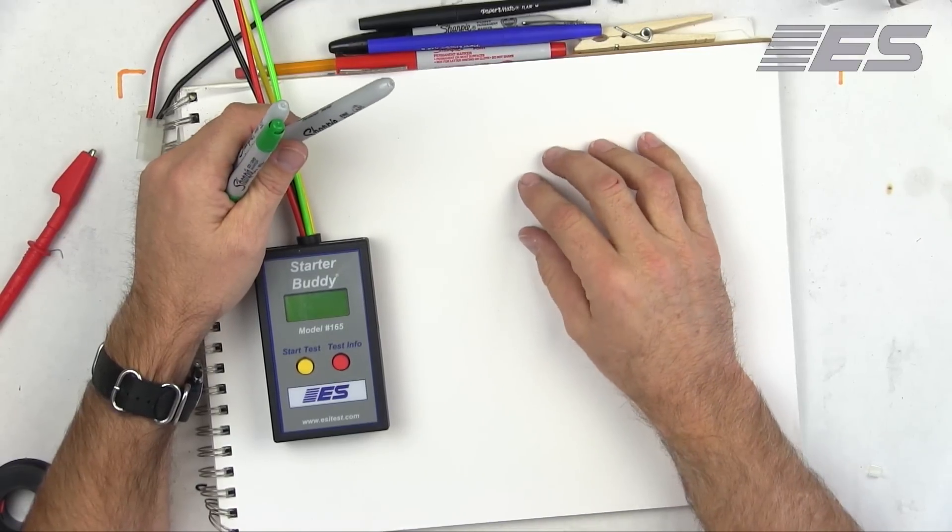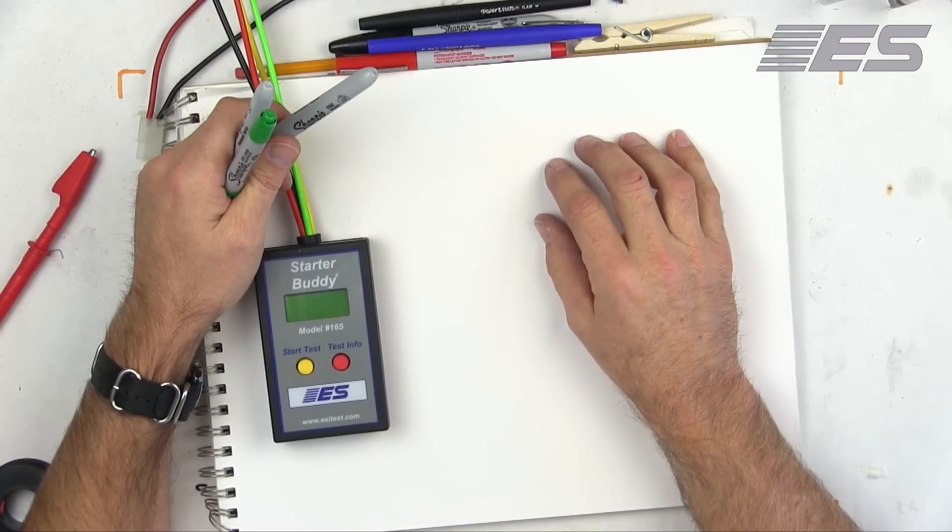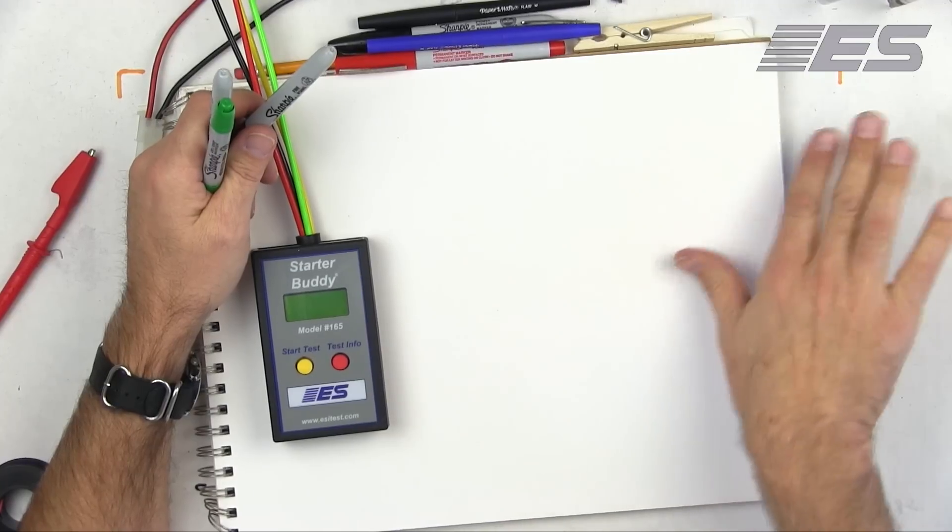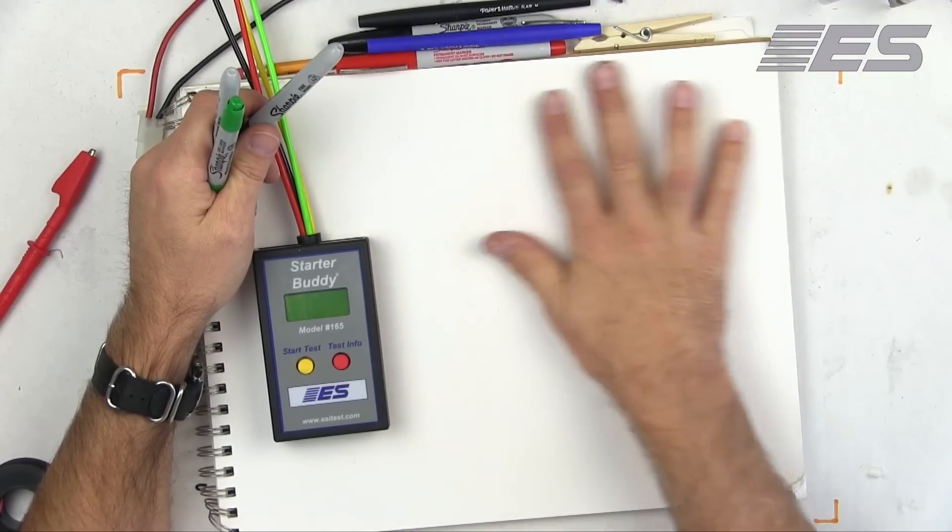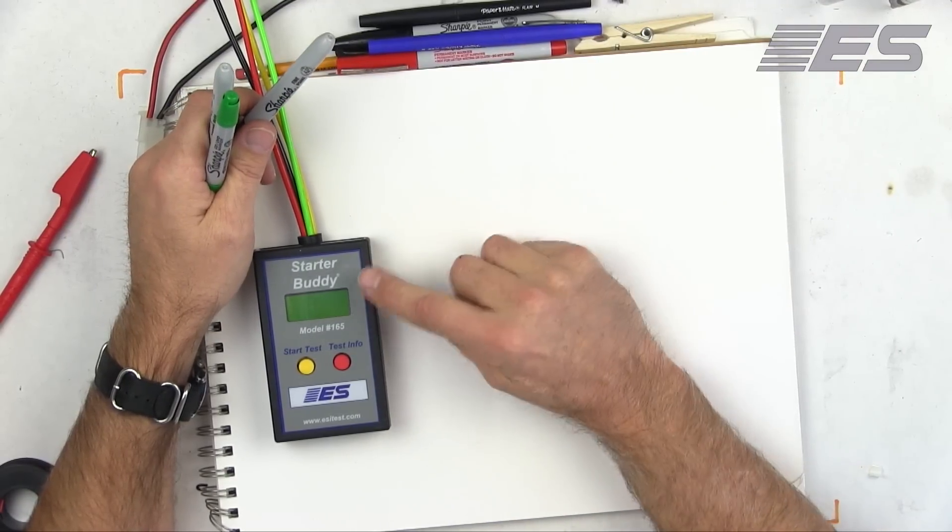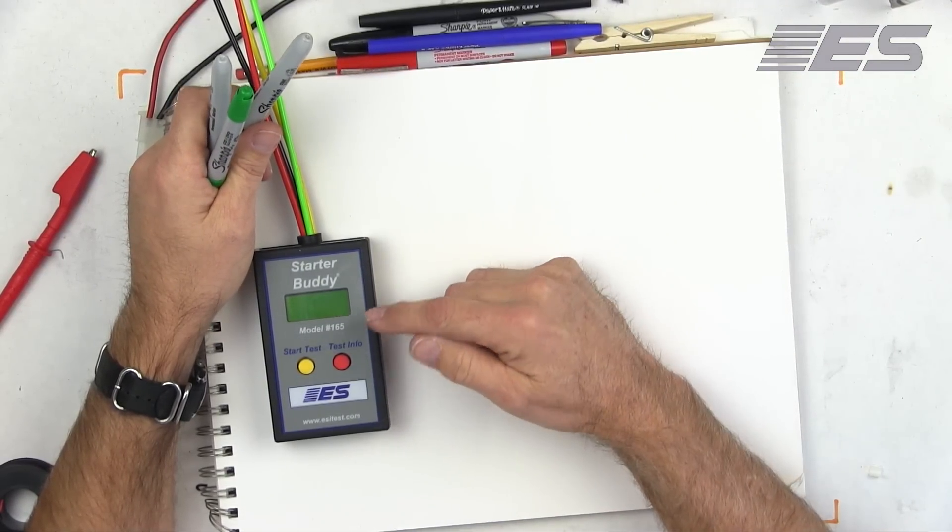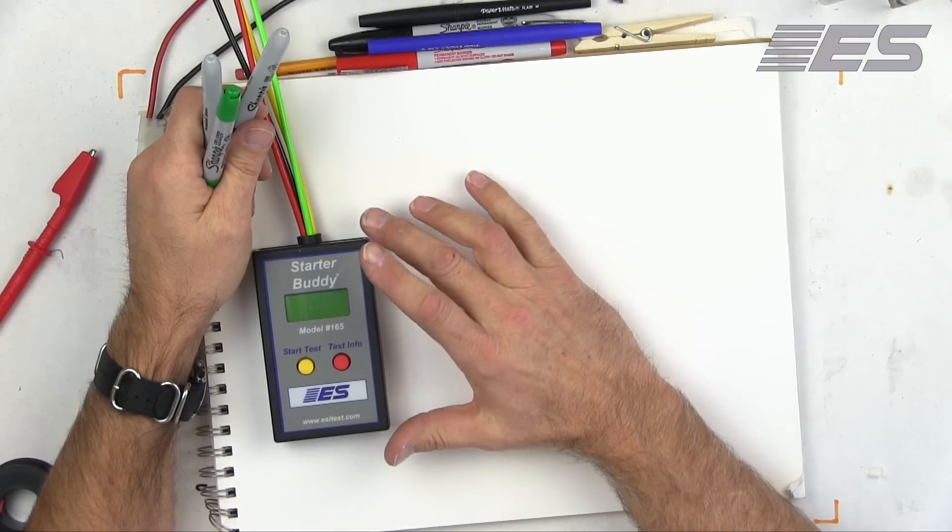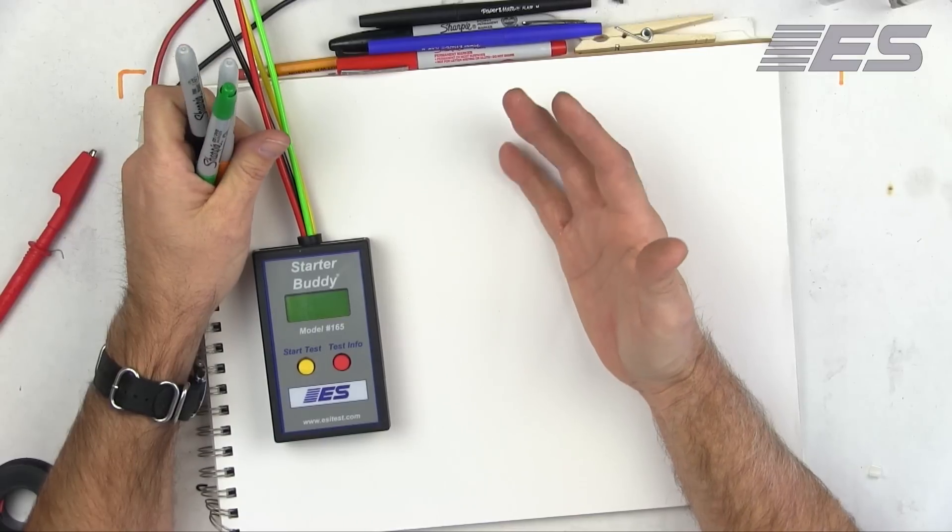Hey guys, this is Dan Sullivan and this is the classroom demo lecture and hands-on for the new ESI-165 Starter Buddy. This tool is designed to simplify the test that you should be doing if you have a slow crank.